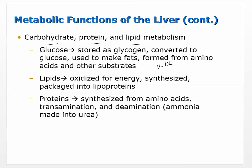Through gluconeogenesis, you can form glucose from amino acids or other substrates like fats when you're really low on glucose. For lipids, they can be oxidized for energy or synthesized — lipids can be made in the liver. Glucose can also be converted into fats and packaged into those lipoproteins. Cholesterol is also made in the liver.